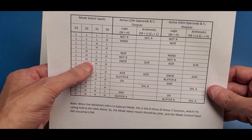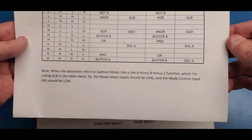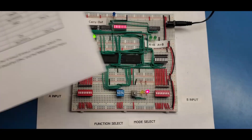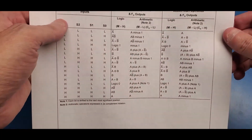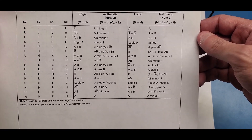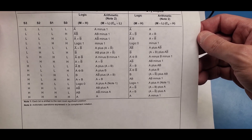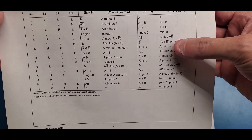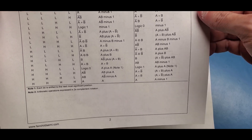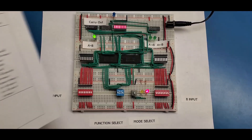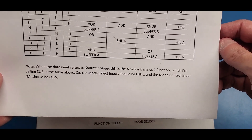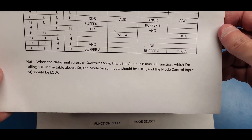On the datasheet you can see on this line — low-high-high-low — we go into subtract mode. The datasheet refers to this as the 'a minus b minus one' function, and I point that out because if you look at the original datasheet it isn't obvious, at least to me, what they're talking about when they refer to subtract mode. There's nothing in there that's simply a minus b; the closest we have is 'a minus b minus one,' and that certainly didn't jump out at me as being the subtract mode — but it turns out that is what they're talking about.